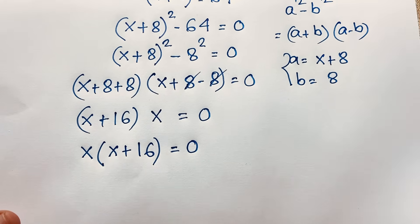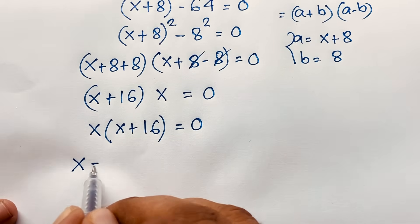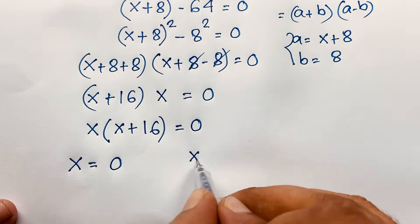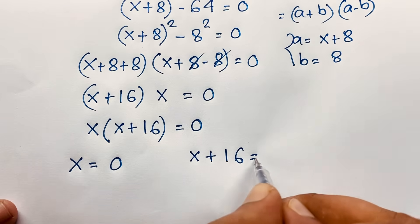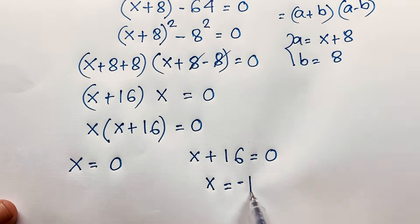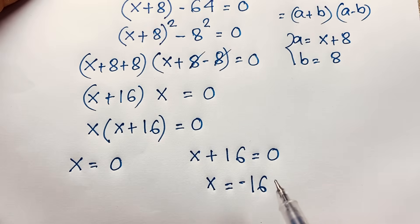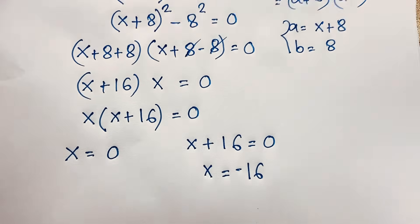So there are two cases here. Our first case: x = 0. Another case: x + 16 = 0, then x = −16. So our final solutions from Method 1 are x = 0 and x = −16. It is an easy math problem.